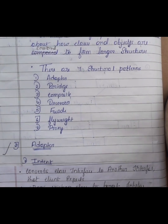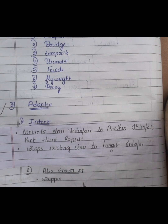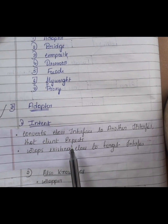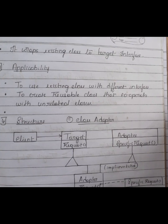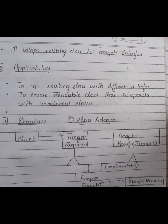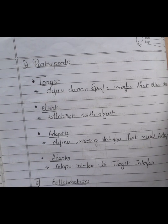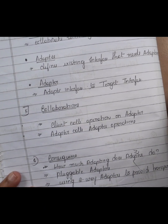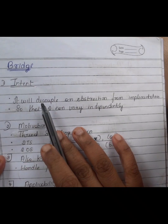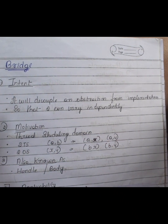The next question is on the Adapter design pattern. You should explain its intent, also known as motivation, applicability, structure, participants, collaborations, consequences, and implementation.